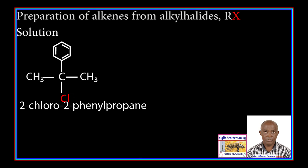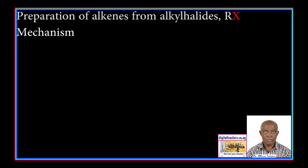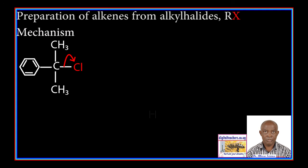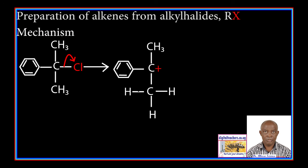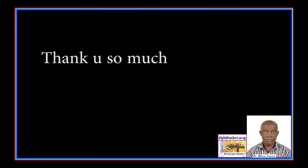Exercise solution: 2-chloro-2-phenylpropane reacts with hot potassium ethoxide and ethanol to form 2-phenylpropene. In the mechanism, 2-chloro-2-phenylpropane ionizes to form a tertiary carbonium ion. Then the ethoxide group removes a proton from the carbon next to the one bearing the positive charge, and a double bond forms leading to the formation of 2-phenylpropene.